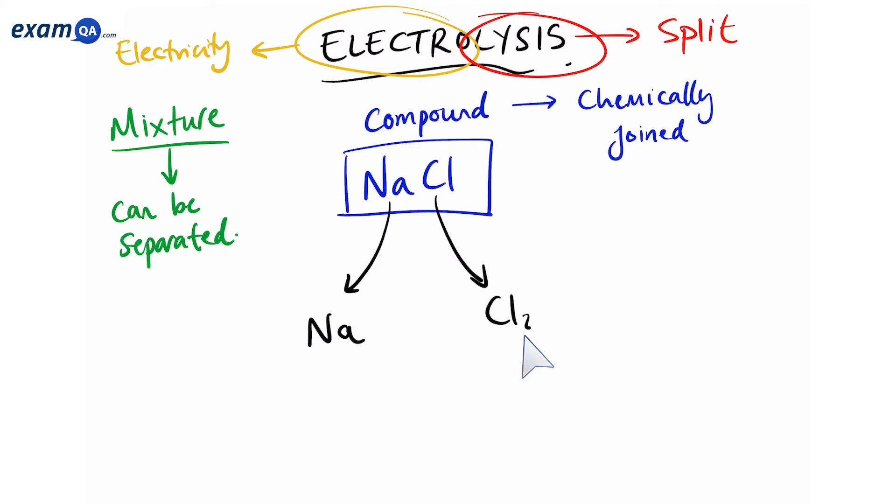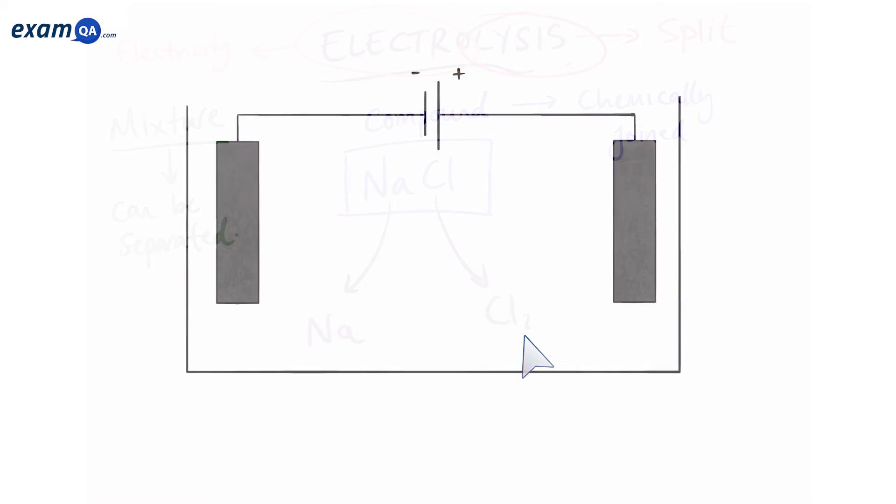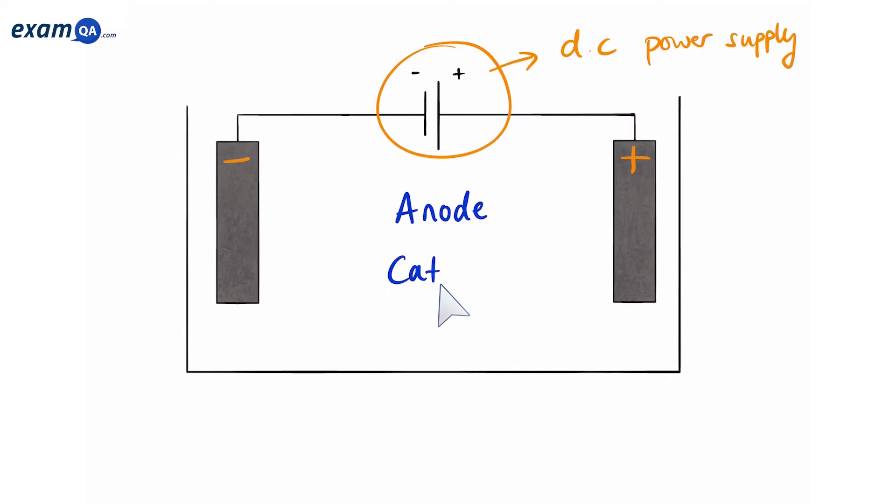This is what an electrolysis setup looks like. We have a power supply and two electrodes. Now these electrodes both have names. One of them is called an anode, and the other one is called a cathode. And if you forget which way around it goes, then it's time to panic. Because positive is the anode, and negative is cathode.